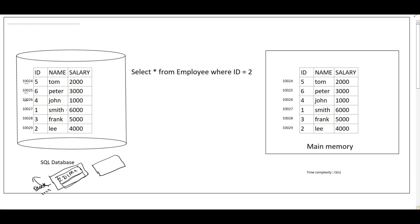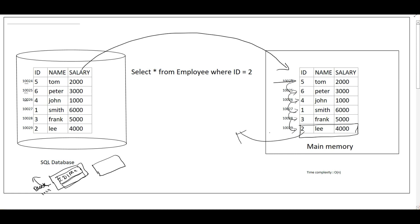Now, when a user runs a query like SELECT * FROM employee WHERE id = 2, SQL will first load the employee table into main memory and then perform a linear search from top to bottom. It compares employee ID 5 with 2 — no match. Then 6 with 2 — no match. It continues until it finds ID 2, then returns that particular row to the user.